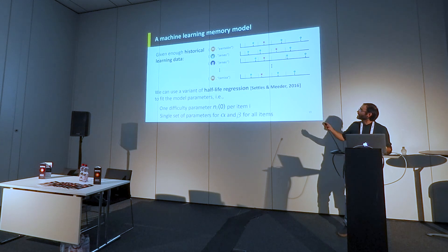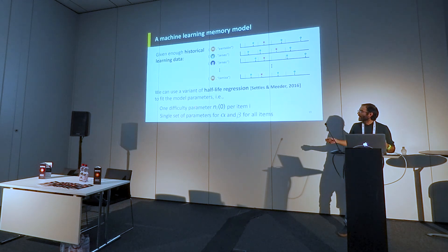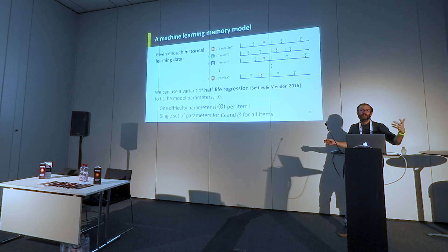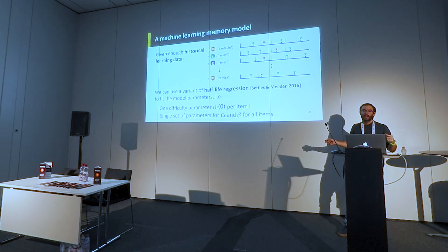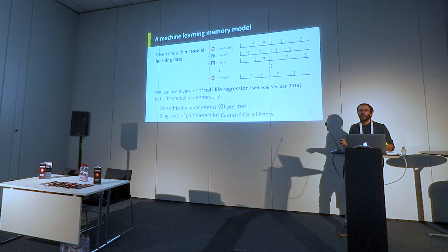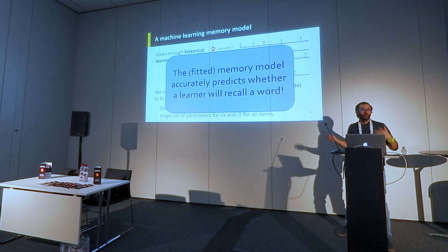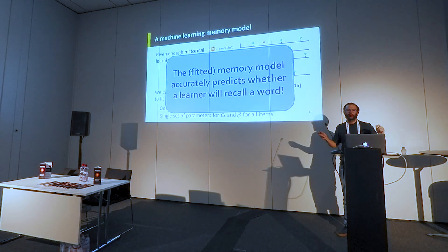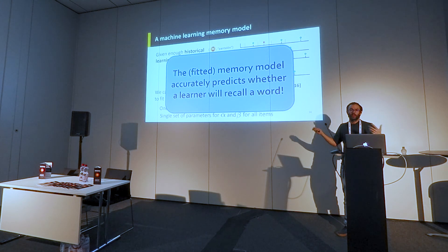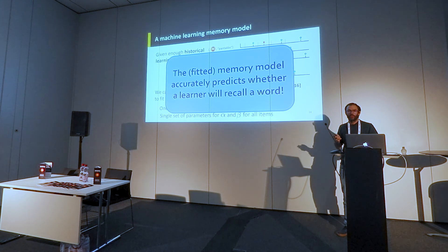Given all these words, we can find a difficulty parameter representing how quickly people on average forget a word, and also how much practice influences the forgetting rate — how much you reduce or increase it when you recall an item successfully or unsuccessfully. The key point is that we can validate this is predictable: given a learner, you can say after a period of time whether they will recall a word or not.